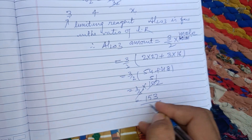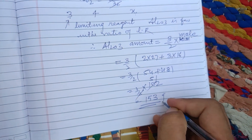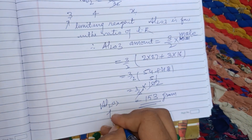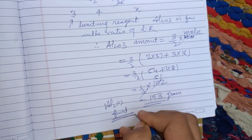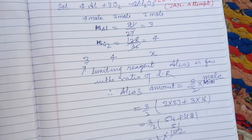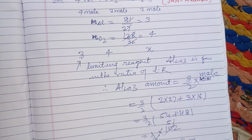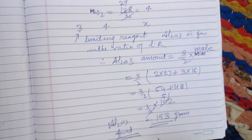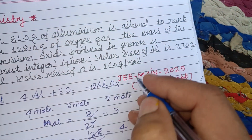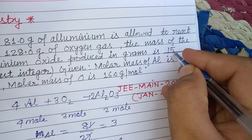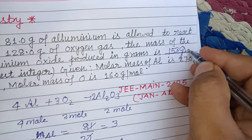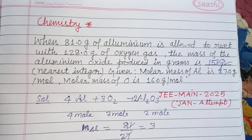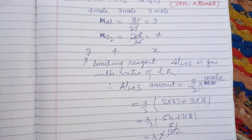So 153 grams of Al₂O₃ is formed with the given moles of aluminium and oxygen. The answer to this question is 153 grams. I hope you got it — please like the video, subscribe to the channel, thanks for watching.